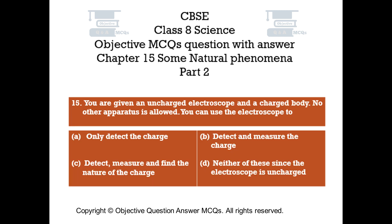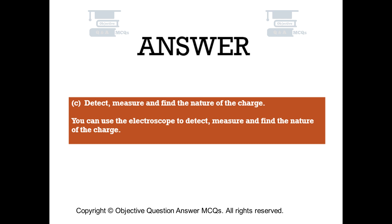Question number 15: You are given an uncharged electroscope and a charged body — no other apparatus is allowed. You can use the electroscope to. Option A: Only detect the charge. Option B: Detect and measure the charge. Option C: Detect and find the nature of the charge. Option D: Neither of these since the electroscope is uncharged. The right answer is Option C — detect, measure and find the nature of the charge. You can use the electroscope to detect, measure and find the nature of the charge.